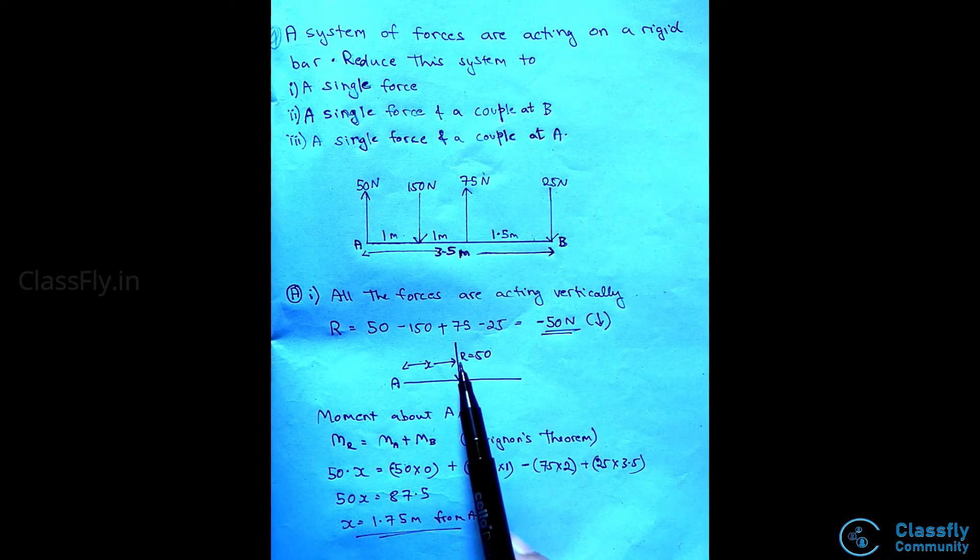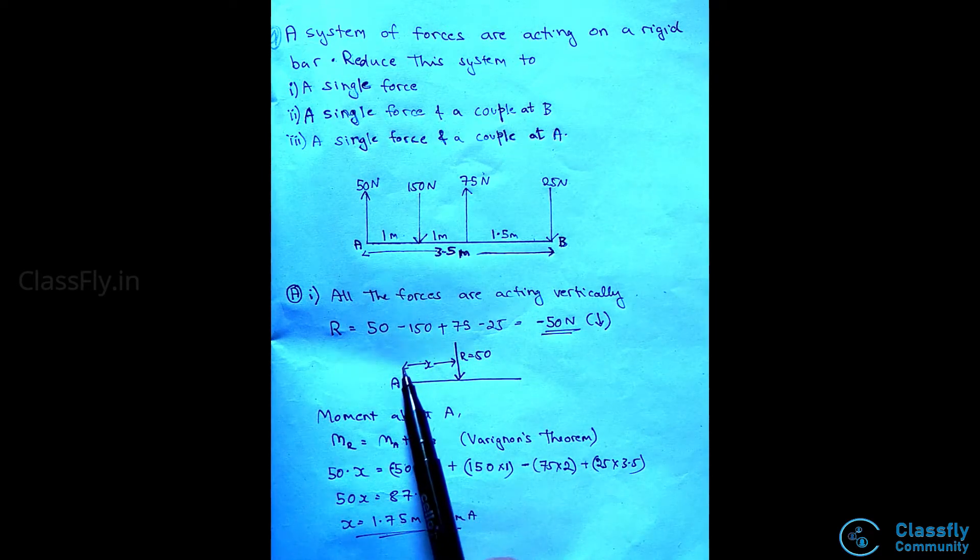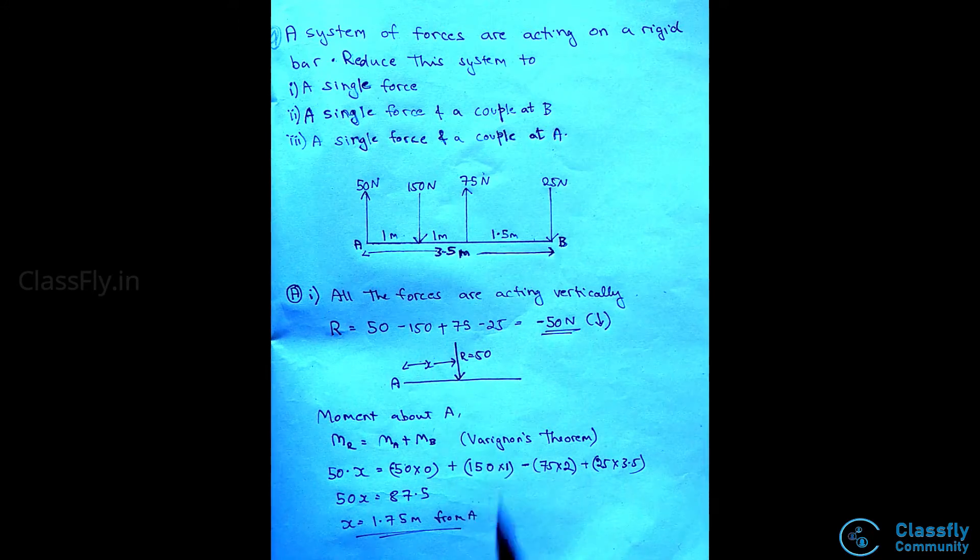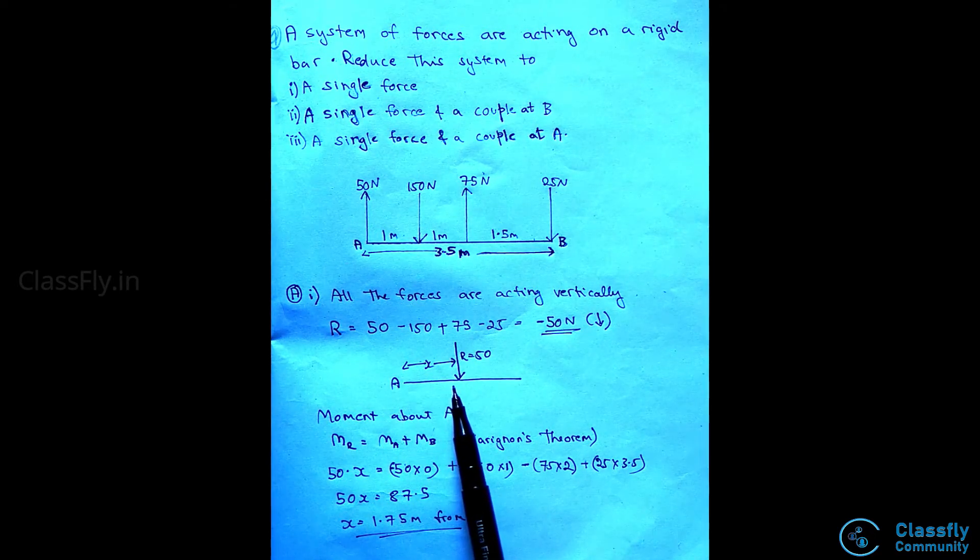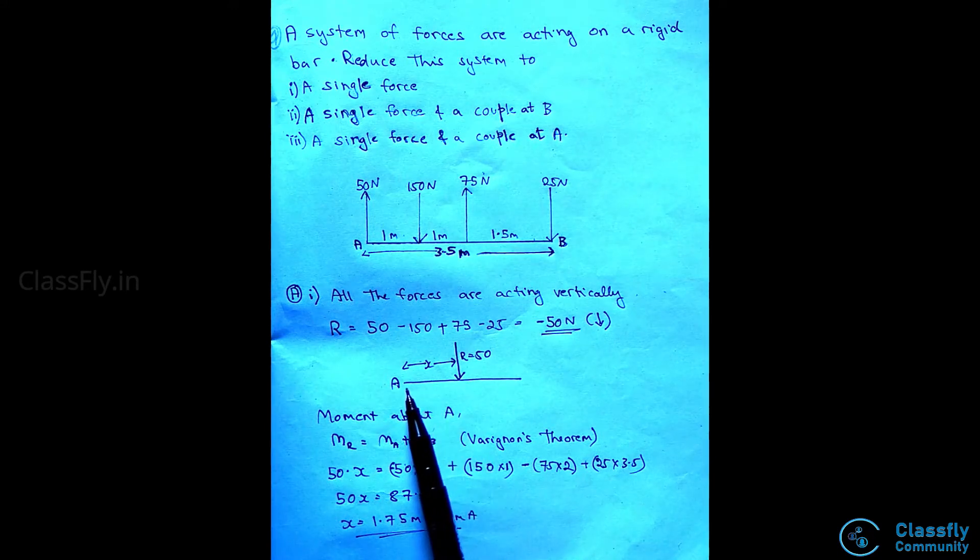Now, this resultant force will act at a distance of x from point A. To find the distance, let us find the moment about A. From Varignon's theorem, we know that the moment of the resultant will be equal to the moment of all the other summation forces. Moment is given by the product of the force and the perpendicular distance of the force from the point.